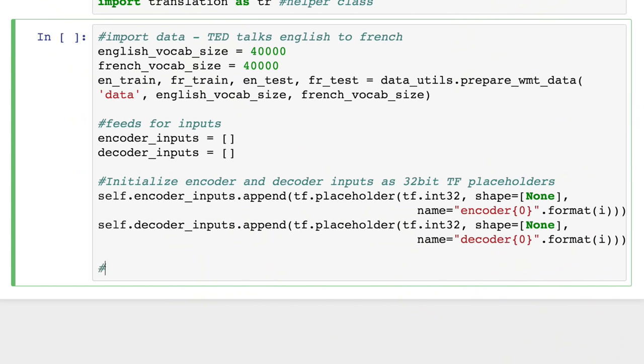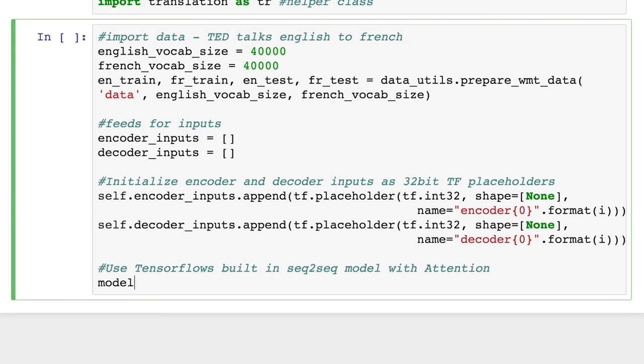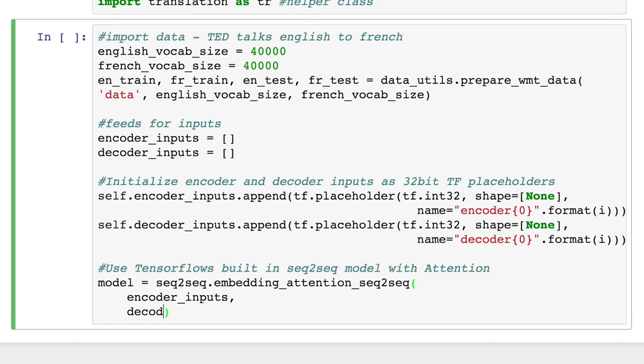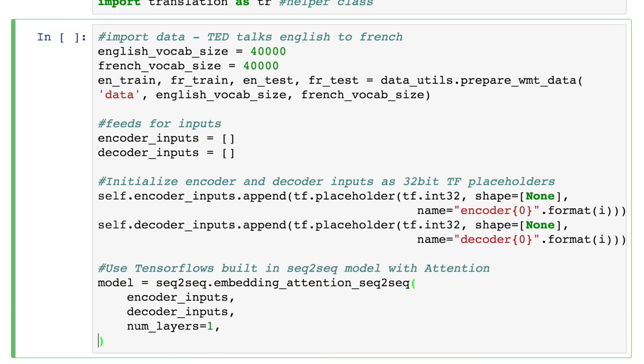We'll build our model using TensorFlow's built-in embedding attention sequence-to-sequence function, giving it our encoder and decoder inputs, as well as a few hyperparameters we define, like the number of layers. It builds a model that is just like the one we discussed. TensorFlow has several built-in models like this that we can drop into our code easily.